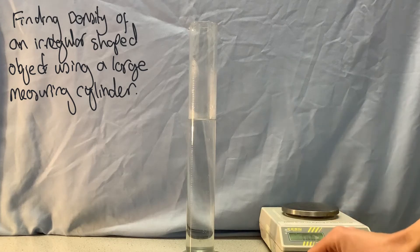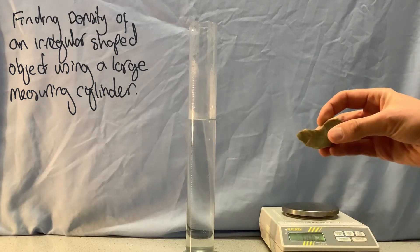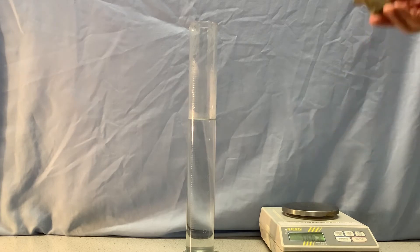Let's look at finding the density of an irregular shaped solid. The first thing is to find the mass of the solid.